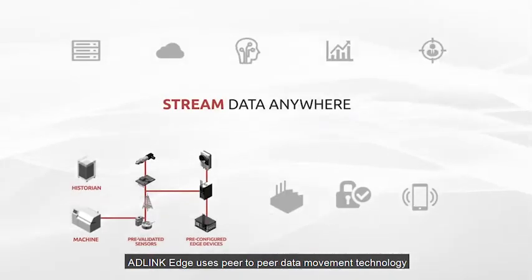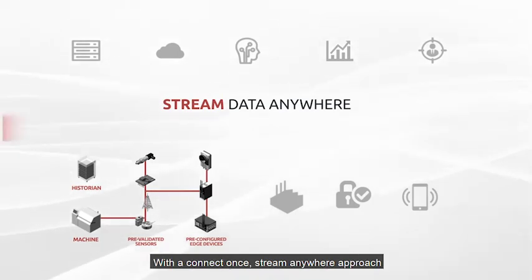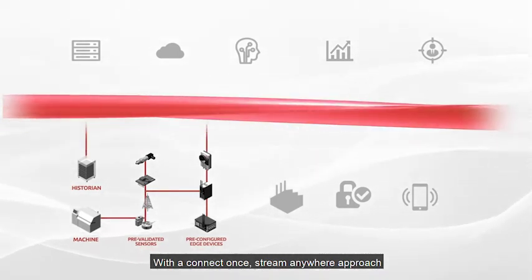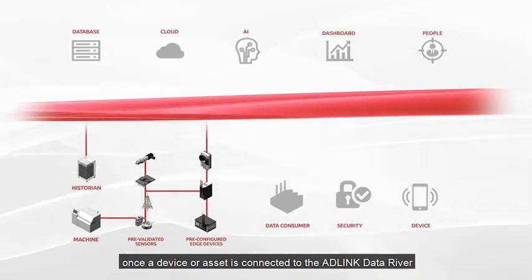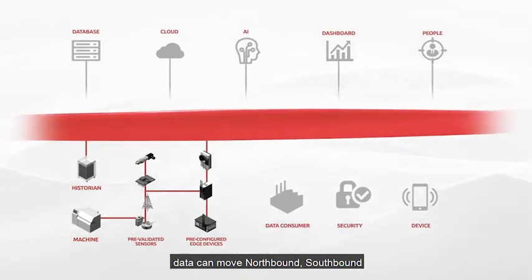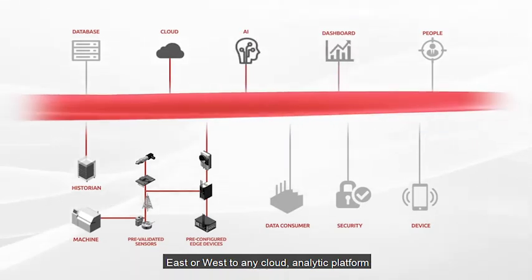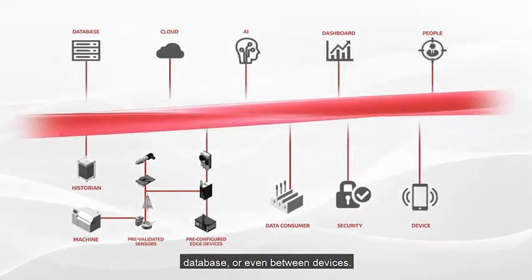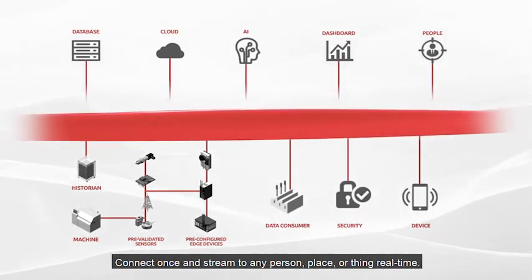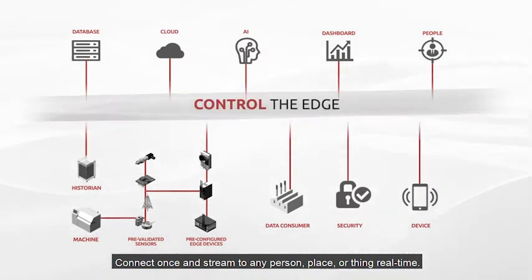ADLink Edge uses peer-to-peer data movement technology to securely transform and move data. With a connect-once, stream-anywhere approach, once a device or asset is connected to the ADLink data river, data can move freely northbound, southbound, east or west to any cloud, analytic platform, database, or even between devices. Connect once and stream to any person, place, or thing, real-time.